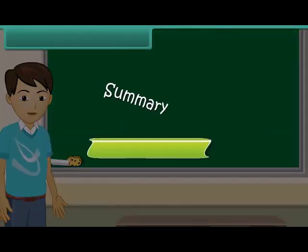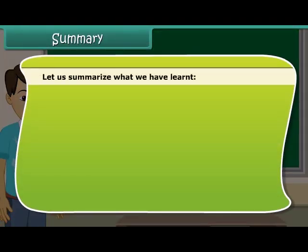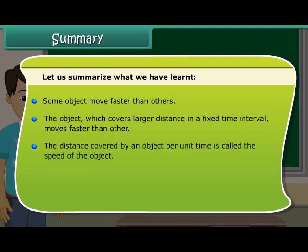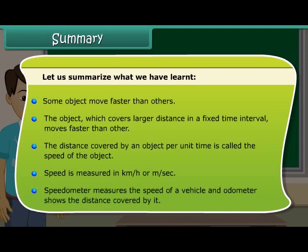Summary. Let us summarize what we have learned. Some objects move faster than others. The object which covers larger distance in a fixed time interval moves faster than other. The distance covered by an object per unit time is called the speed of the object. Speed is measured in kilometer per hour or meter per second. Speedometer measures the speed of a vehicle and odometer shows the distance covered by it.